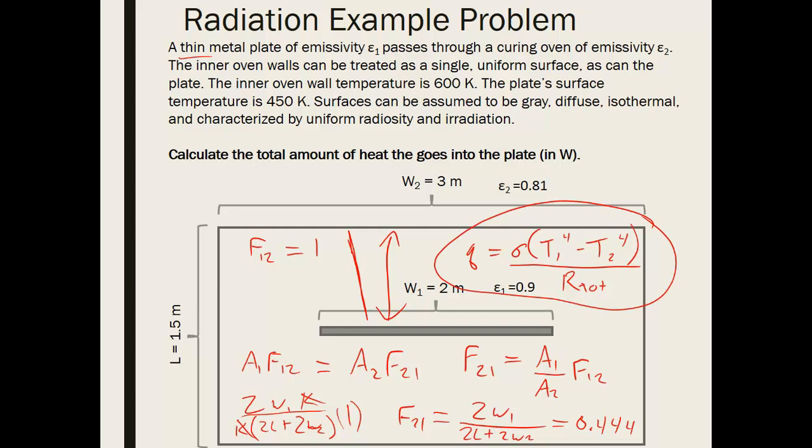And now we're going to plug in what those radiative resistances are. So remember we had q is equal to the Stefan Boltzmann constant times t1 to the 4th minus t2 to the 4th. Then this was divided by r total.